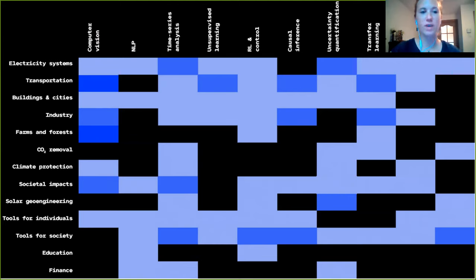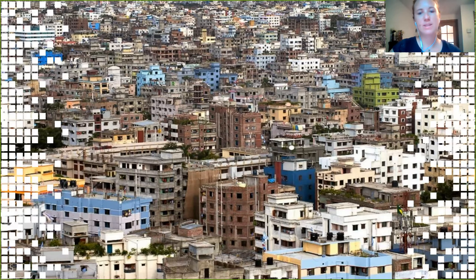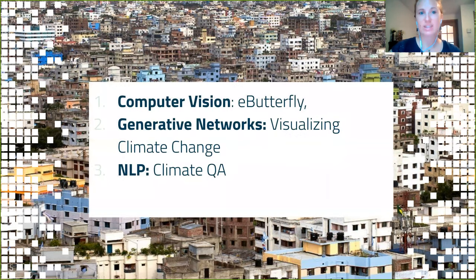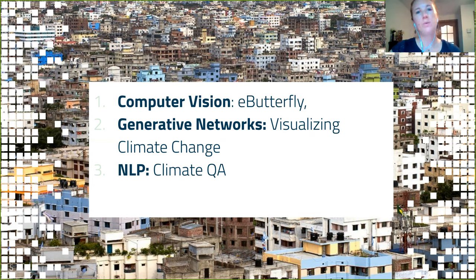It's also a way to show that no matter what machine learning technique you're using, or whether you're an expert or just starting out, there are ways to get involved. Today I want to talk more concretely about how AI can help the climate crisis. I'll show you three case studies of projects I've personally worked on: the first from computer vision called eButterfly, the second from generative networks or GANs called Visualizing Climate Change, and the third from natural language processing called Climate QA.